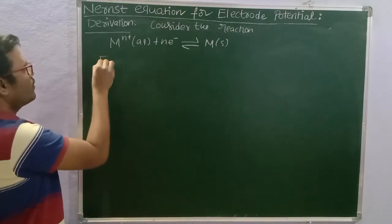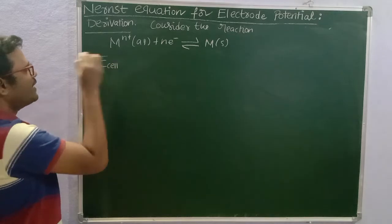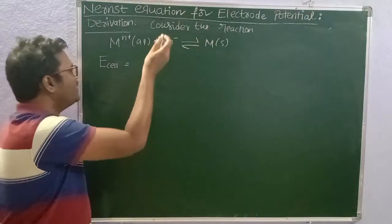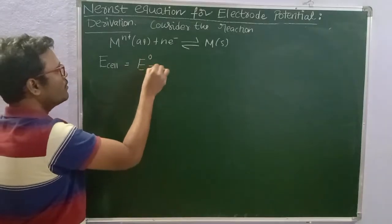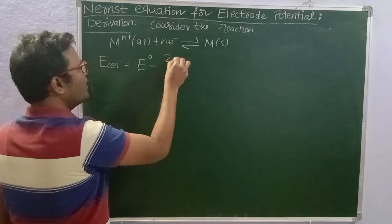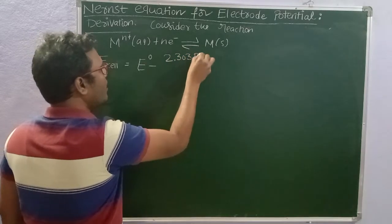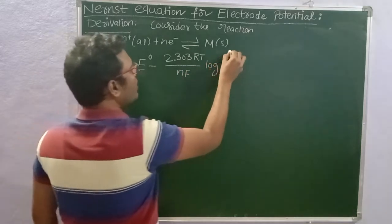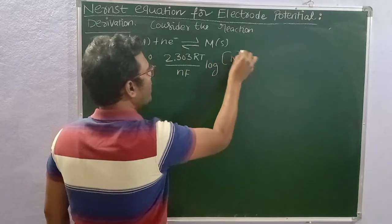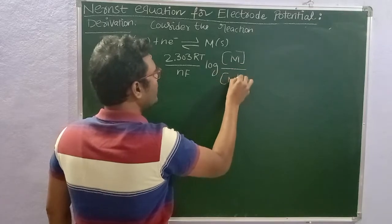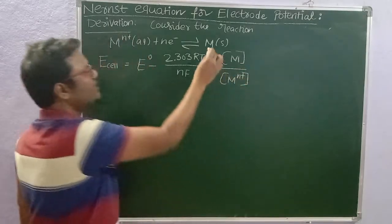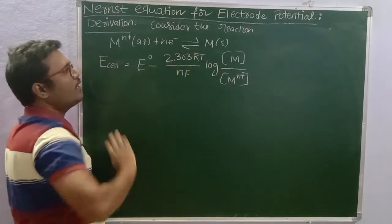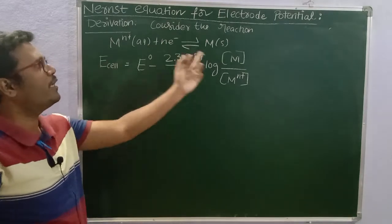The potential of this cell with electrode M is given by: E cell = E naught minus 2.303 RT divided by Nf, times log of concentration of products divided by concentration of reactants. Here the product is metal solid and the reactant is metal ions. This is the Nernst equation for this reaction.